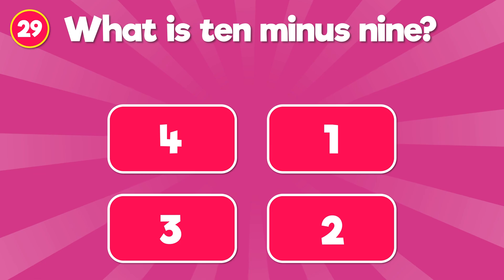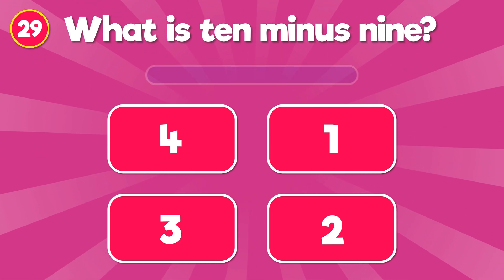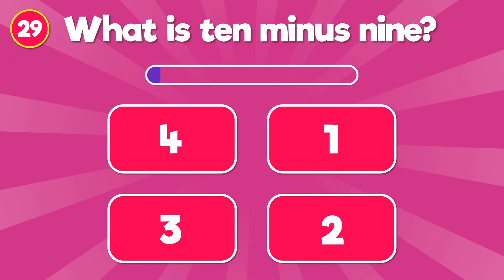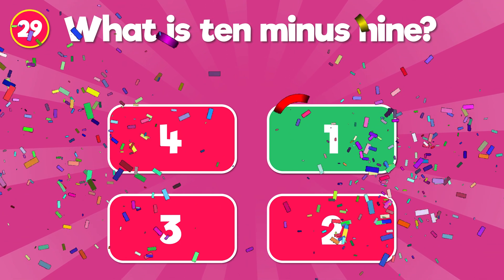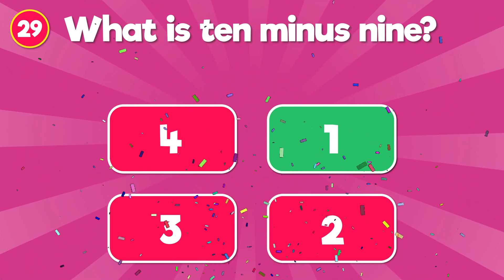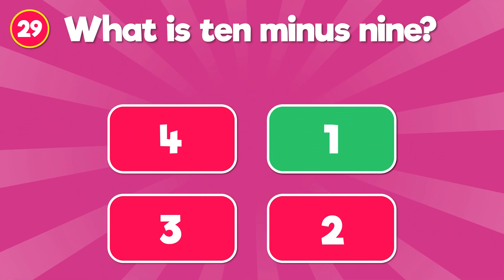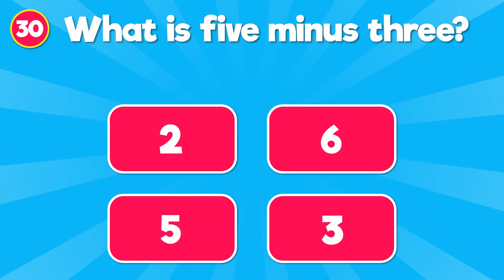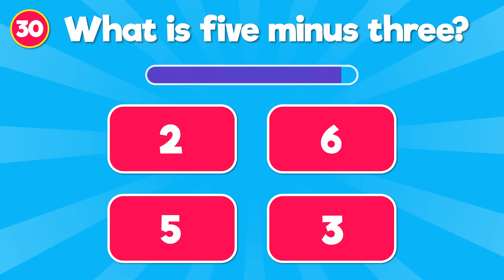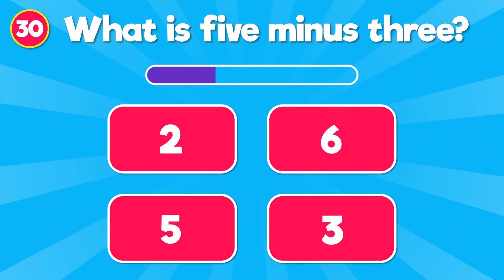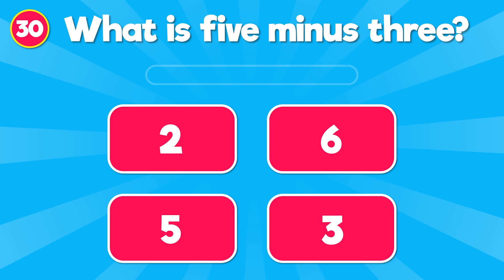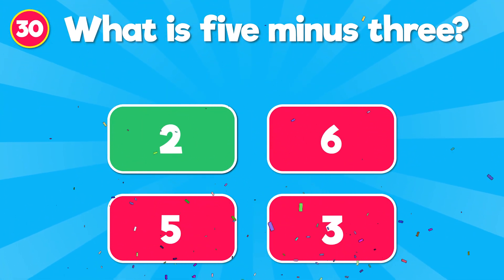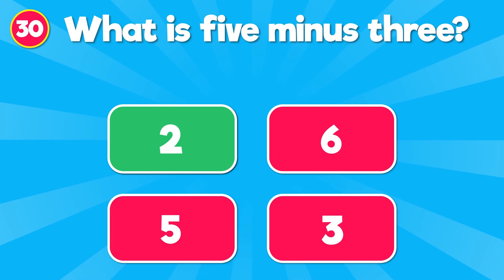What is 10 minus 9? The correct answer is 1. 10 minus 9 is 1. What is 5 minus 3? The correct answer is 2. 5 minus 3 is 2.